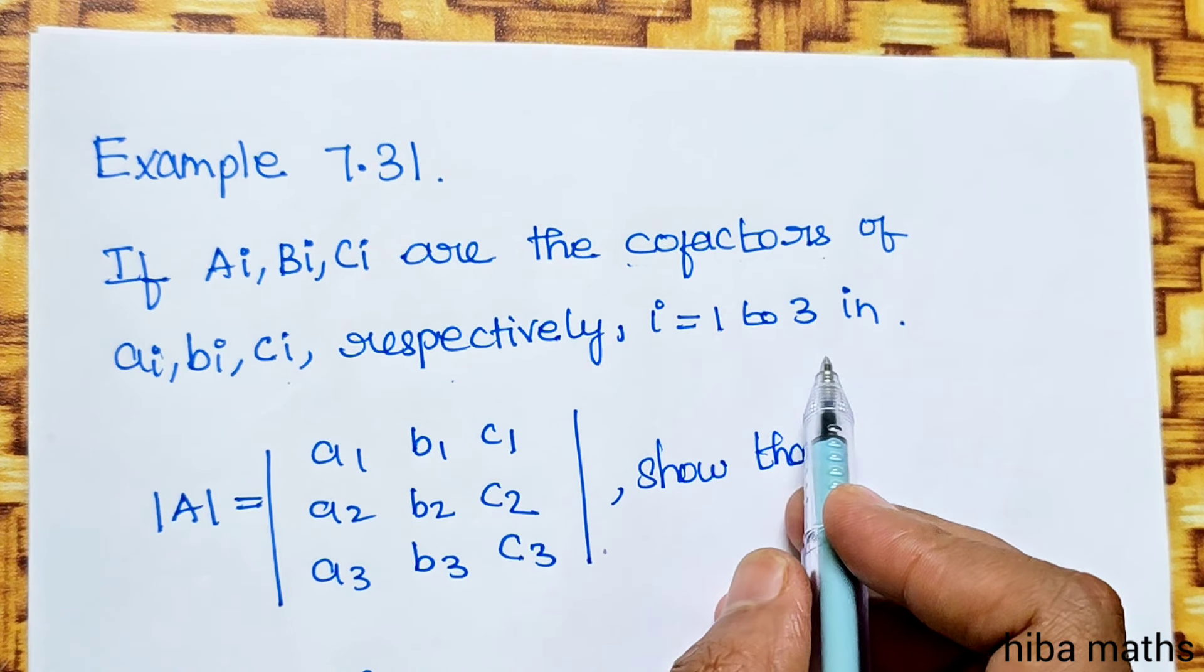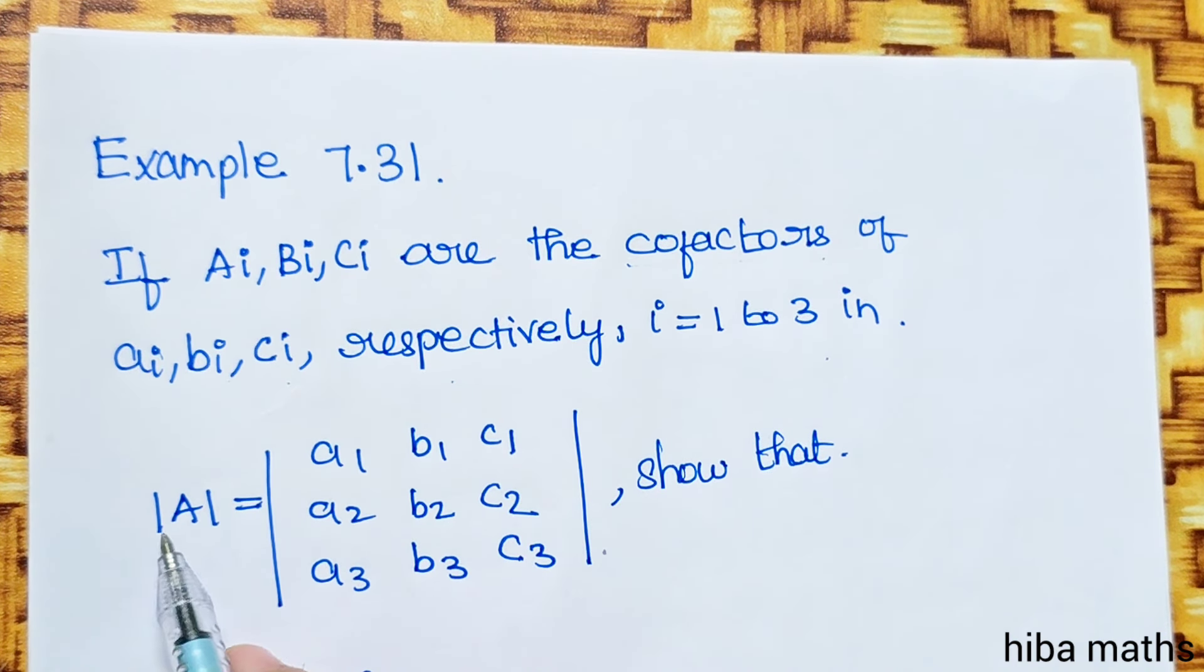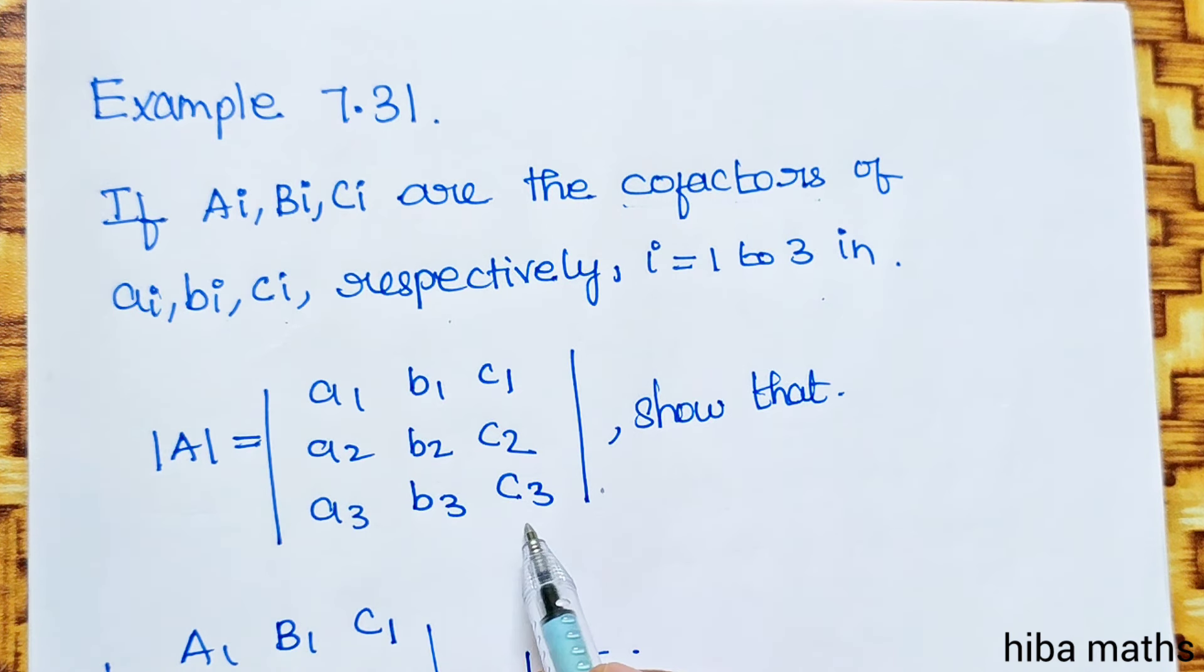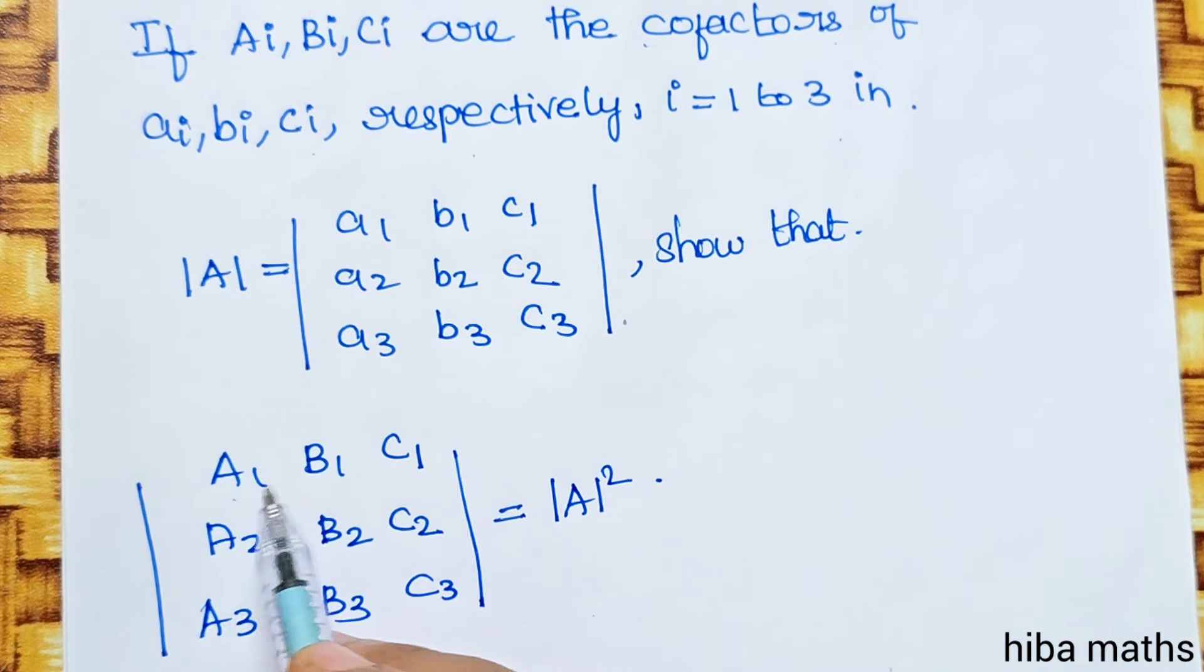where i is equal to 1, 2, 3, in modulus A equals a1 b1 c1, a2 b2 c2, a3 b3 c3,